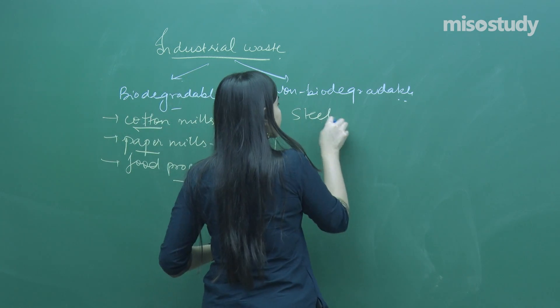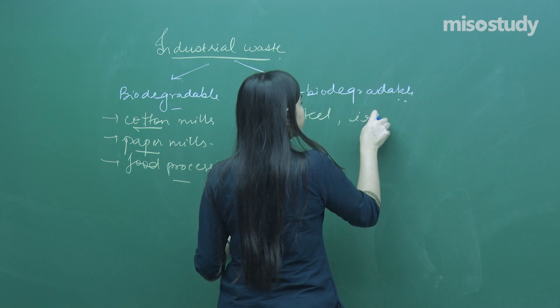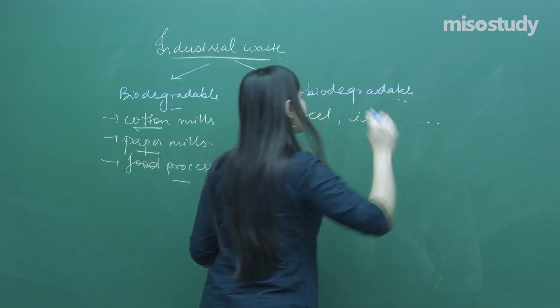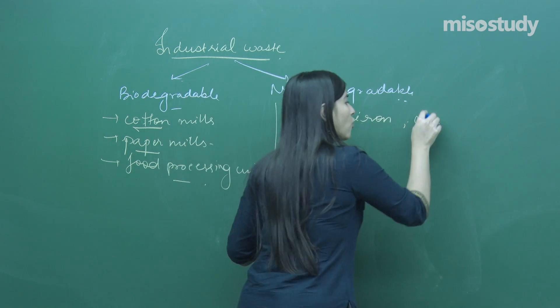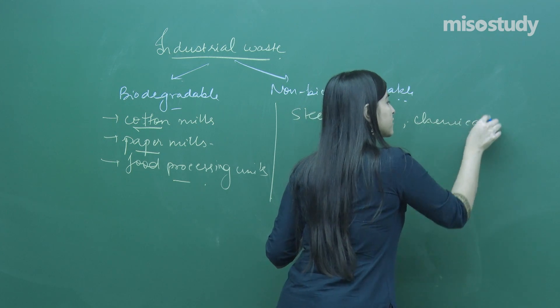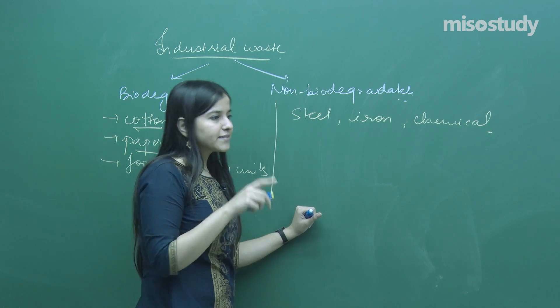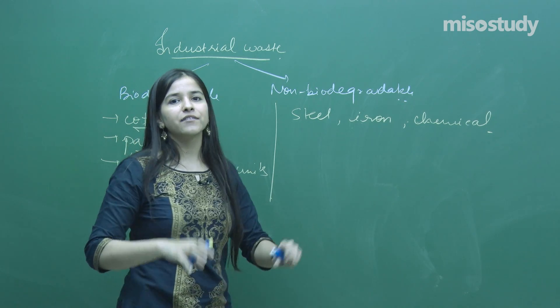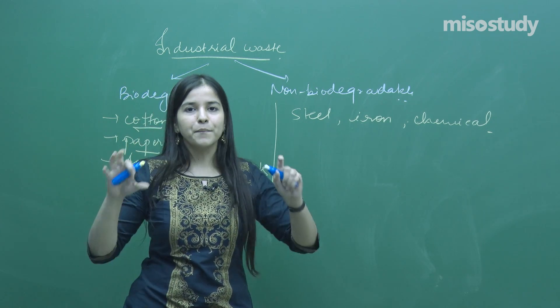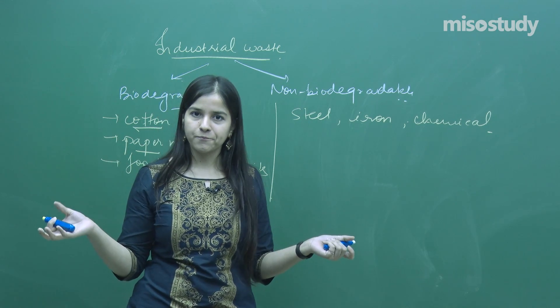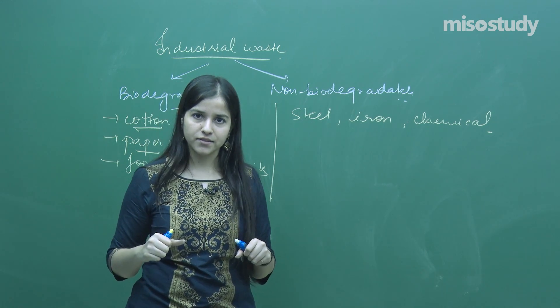Non-biodegradable industries include steel industry, iron industry, and chemical industries. This industrial waste has to be managed. The main thing is management. How can we manage this industrial waste?